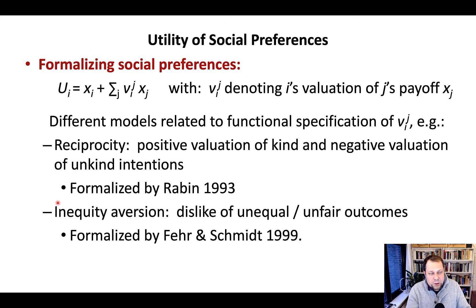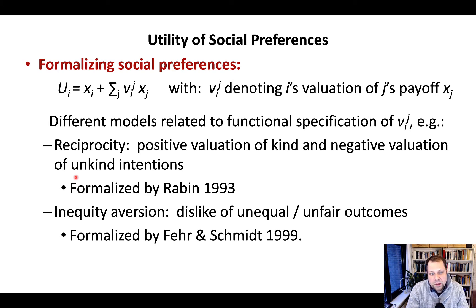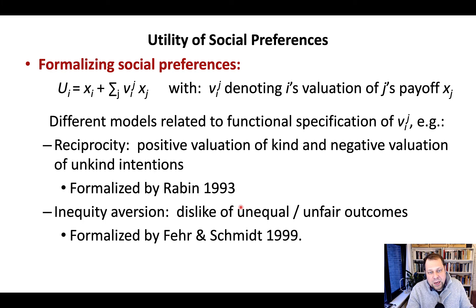There is also the inequity aversion model, formalized by Fehr and Schmidt in 1999. That model says we compare our payouts to those of others — if we're worse off than others we dislike this, but we also dislike being much better off than others. In general, we dislike unequal or unfair outcomes.